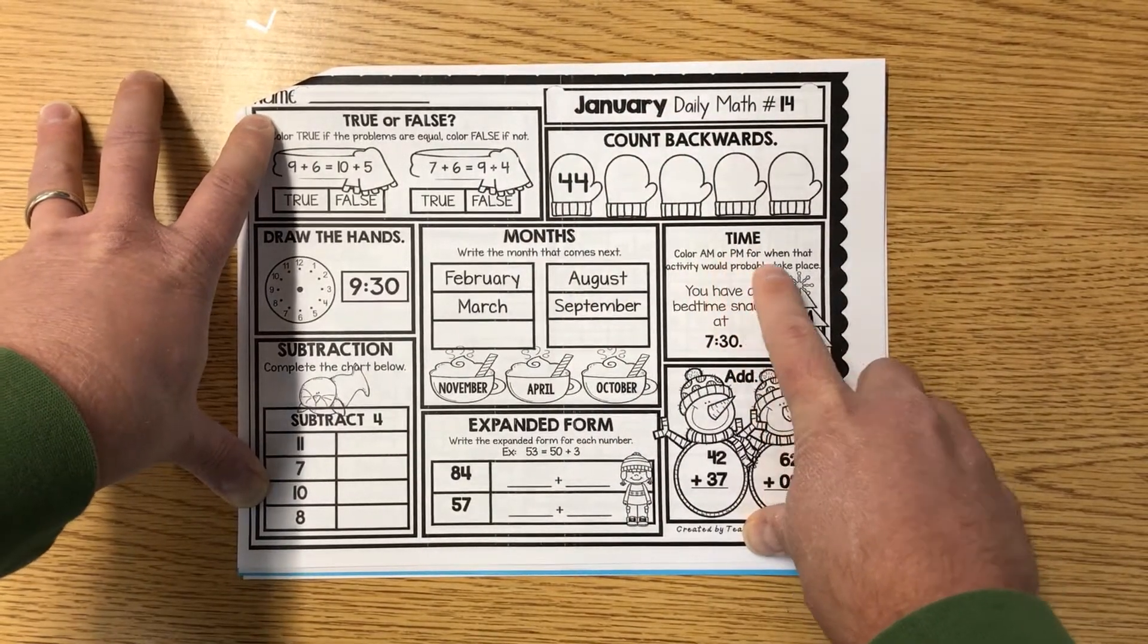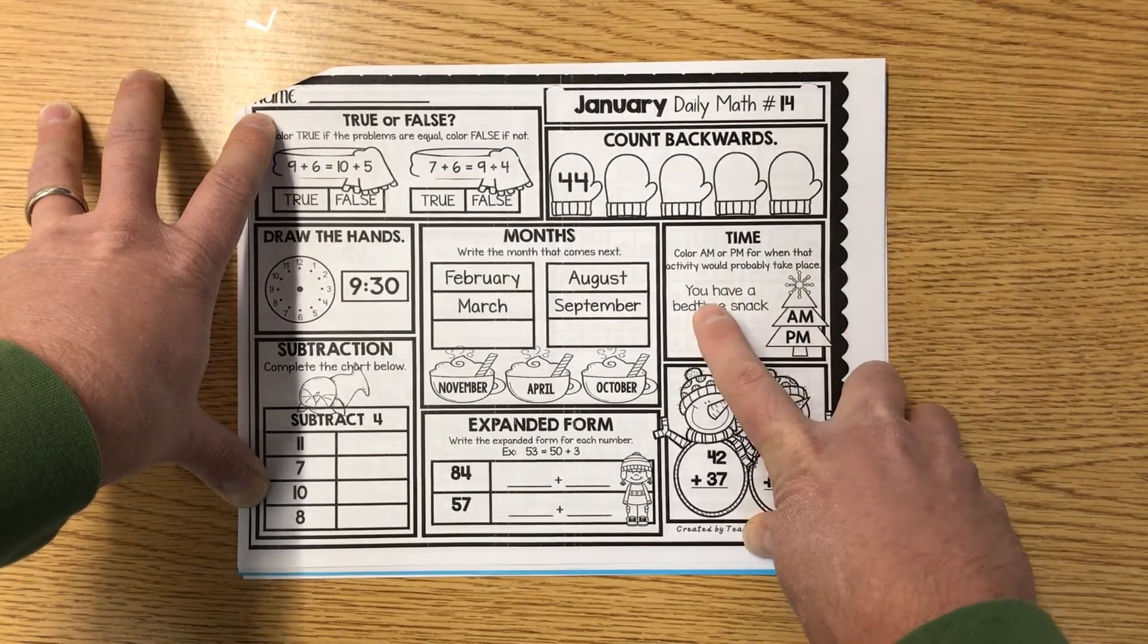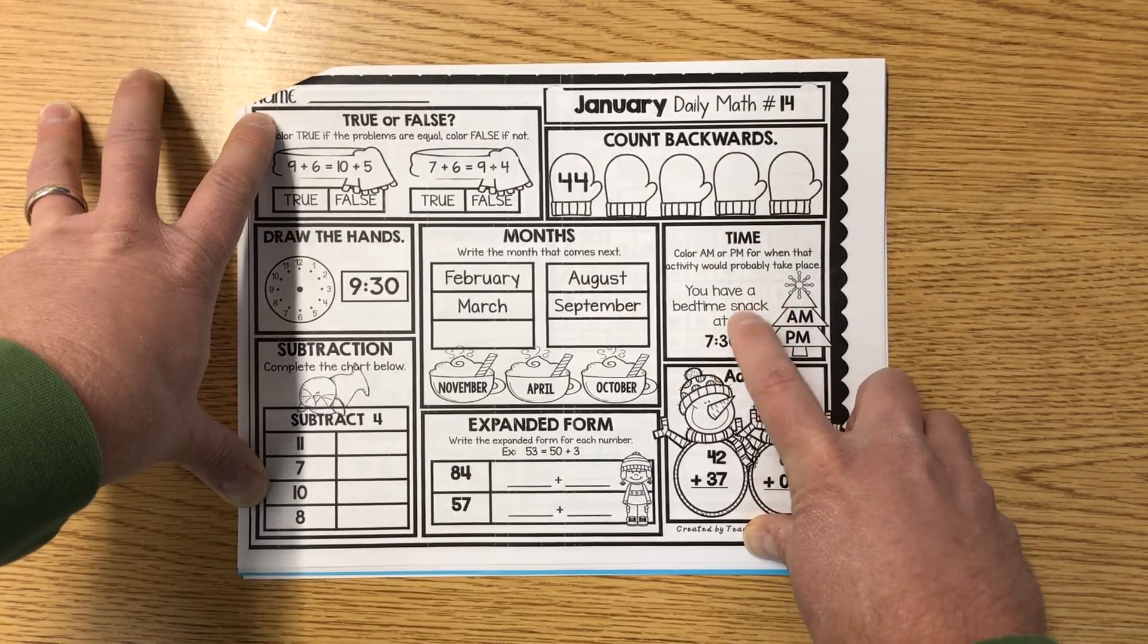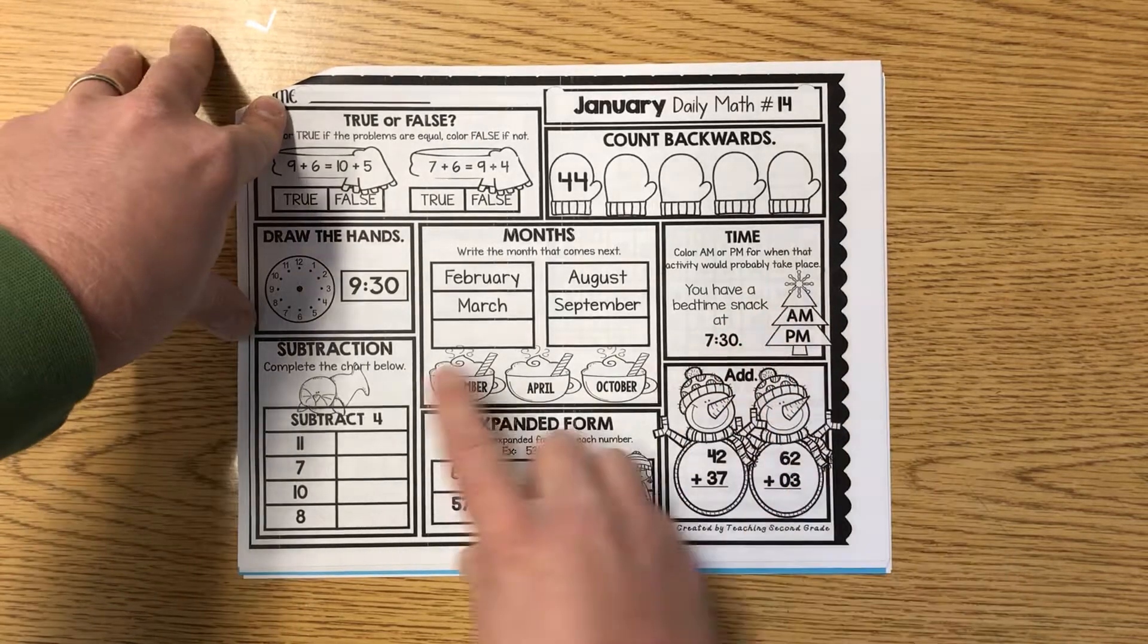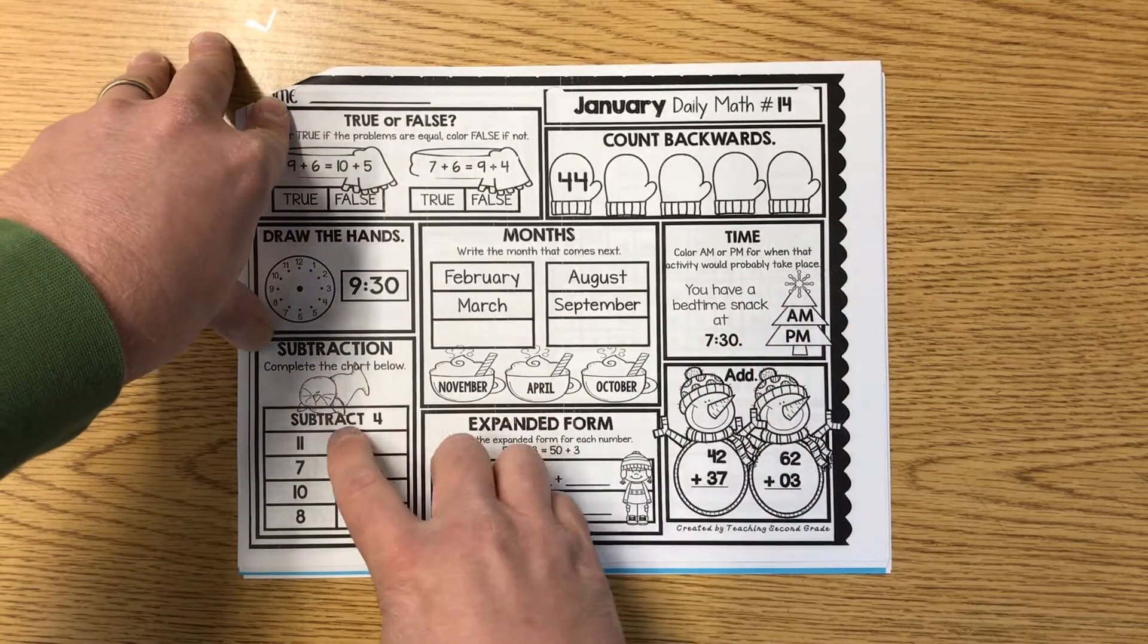Time, color a.m. or p.m. for when that activity would probably take place. You have a bedtime snack at 7:30, either a.m. or p.m. Subtraction. Complete the chart below. Subtract by four.